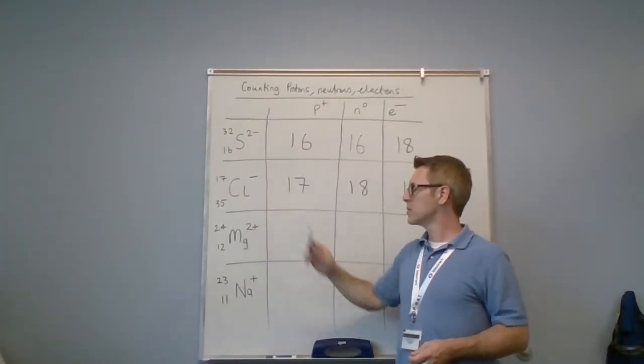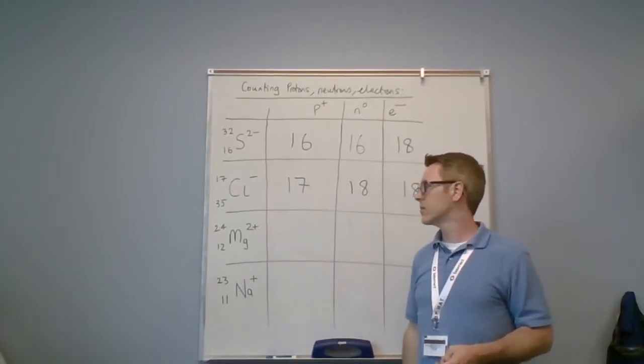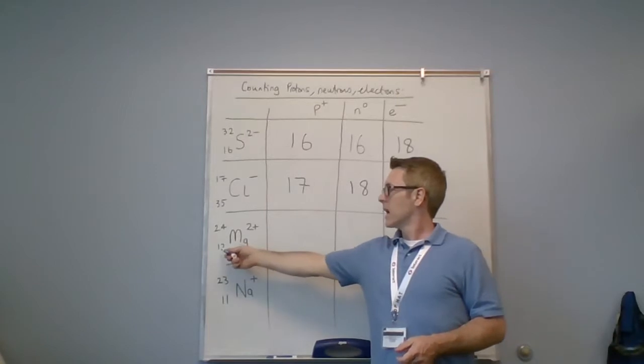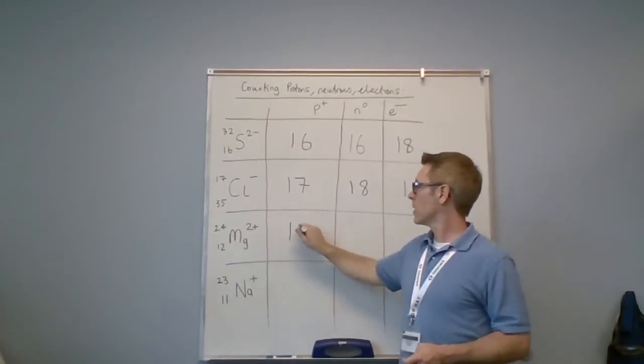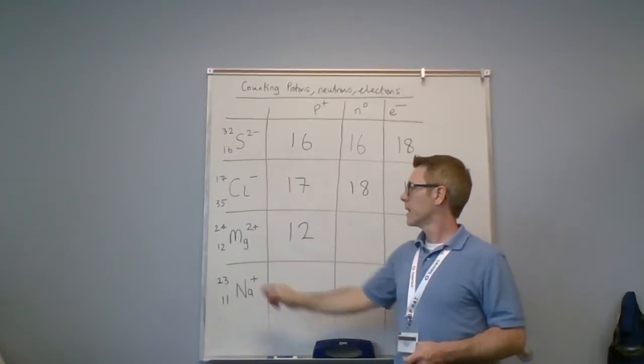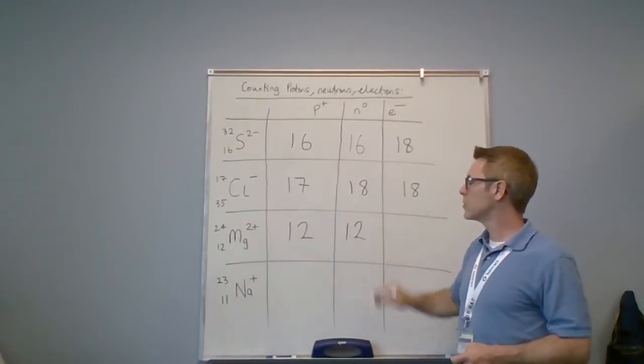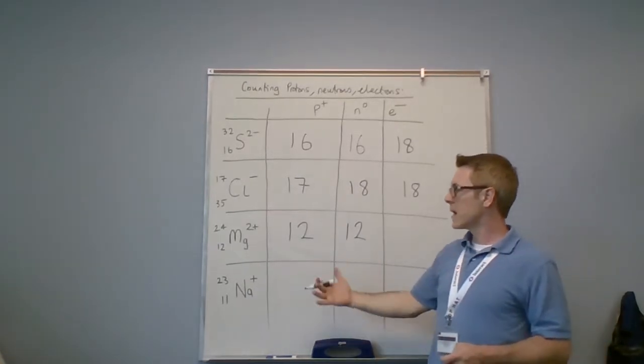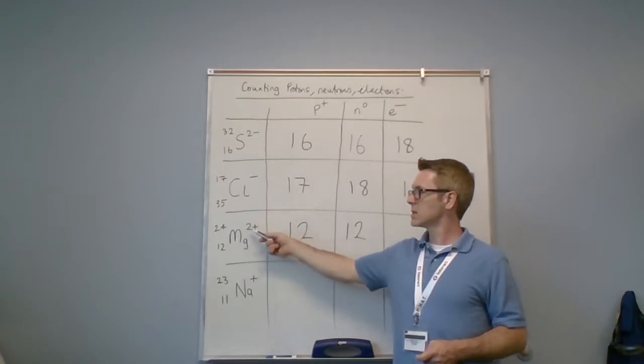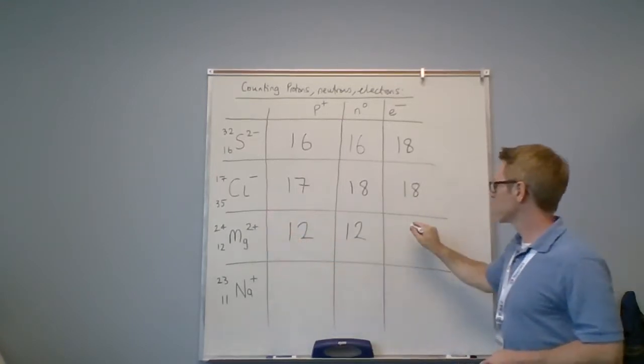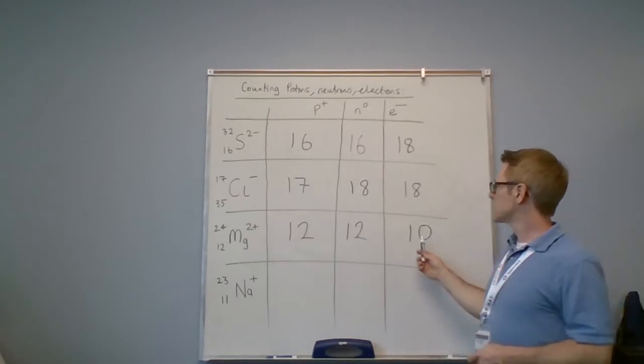Here I have a plus two charge. A plus two charge is the loss of two electrons. Again, start with protons: 12 is smaller than 24, so I have 12 protons. 24 minus 12 is 12—I have 12 neutrons. Ordinarily I would have 12 electrons; on this occasion I've lost two, so I only have 10 electrons.